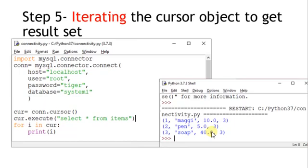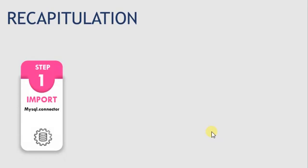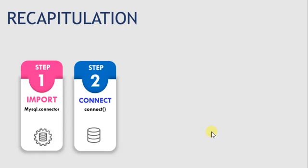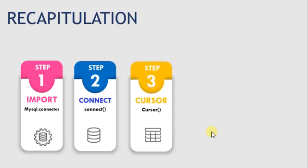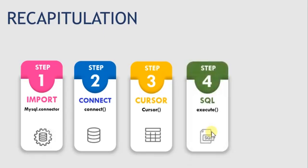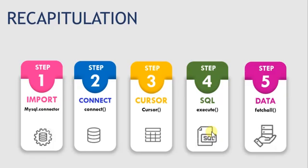Let's recap all five basic steps: number one, import mysql.connector; number two, link to the database using the connect() function; number three, prepare the cursor object; number four, execute the query using cursor.execute(); and number five, print the results using a simple for loop. That was the end of this session. Follow the next video for the lab session. Happy coding, thank you!